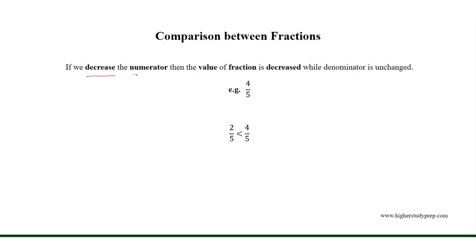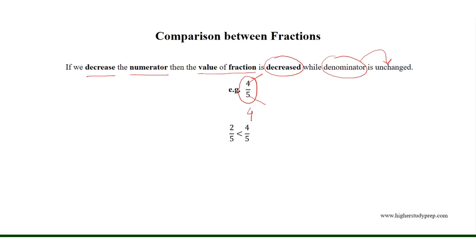If we decrease the numerator, then the value of the fraction is decreased while the denominator is unchanged. For example, if we consider the fraction 4 over 5, where 4 is the numerator and 5 is the denominator, and we decrease the numerator from 4 to 2 — where 2 is less than 4 — therefore the fraction 2 over 5 is less than the fraction 4 over 5, while the denominator 5 is unchanged.